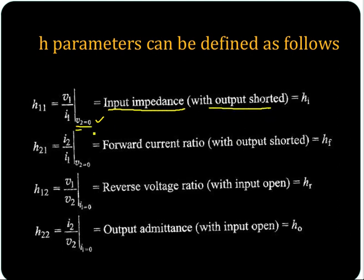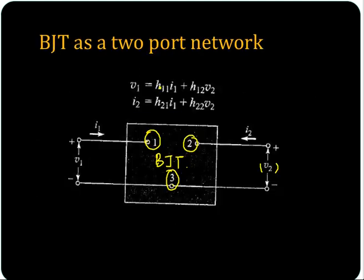V2 equal to 0 means output is shorted, and this is indicated as HI — I indicating input impedance. Then H21 is equal to I2 by I1 for V2 equal to 0, from the second equation.